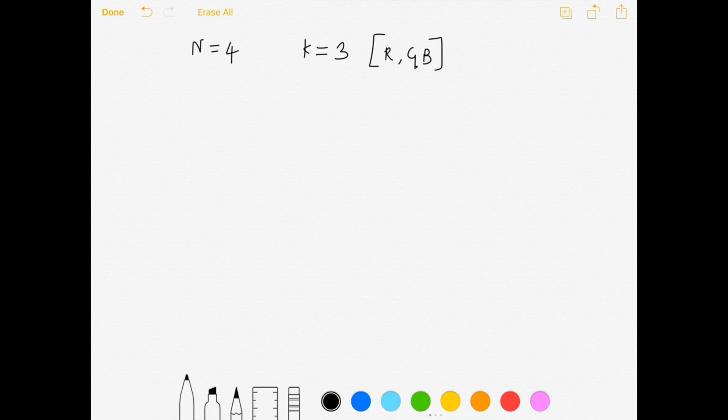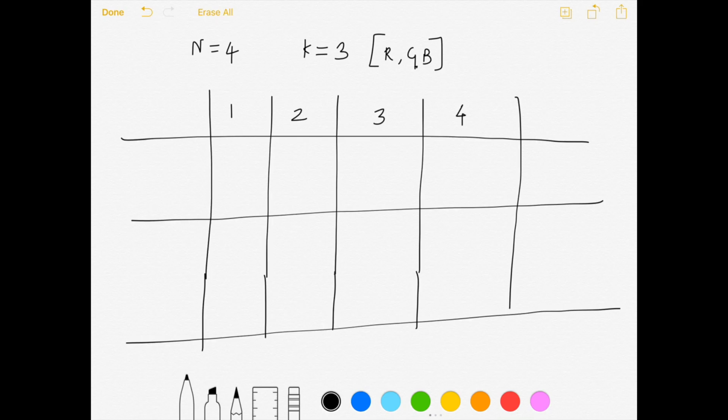We have a total of four posts. So I will create a table with four columns and on the vertical side I will have two cases. One is same color and the second would be different color. For the first post, the calculation is pretty straightforward, so we will not be calculating for that. Instead we will start with post number two.